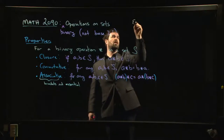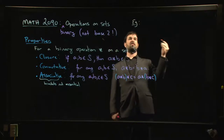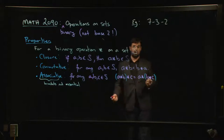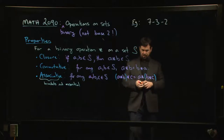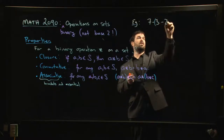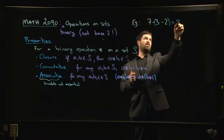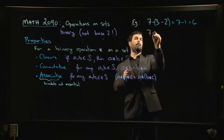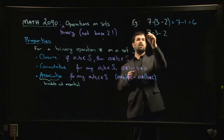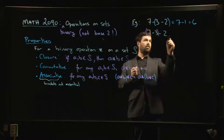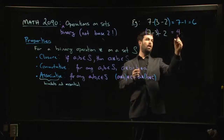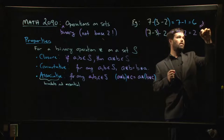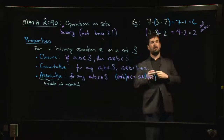An easy example of a non-associative operation is subtraction. Consider 7 minus 3 minus 2 — there's an issue. If you bracket it as 7 minus (3 minus 2), you get 7 minus 1, which is 6. But if you bracket it as (7 minus 3) minus 2, you get 4 minus 2, which is 2. These are very different answers, so subtraction is not associative — the bracketing matters.